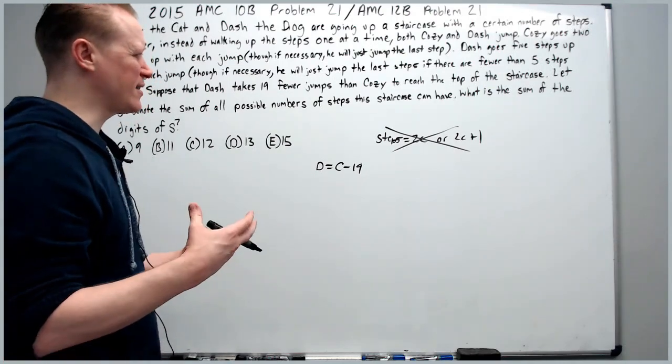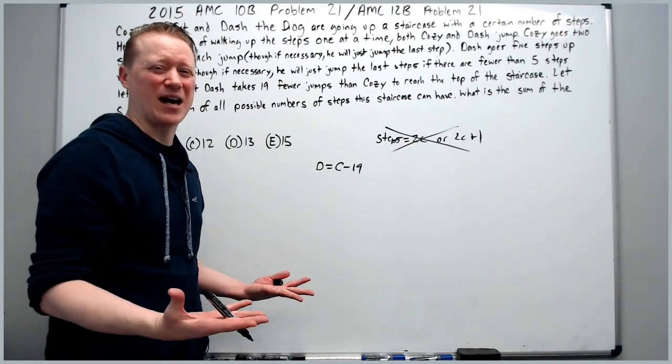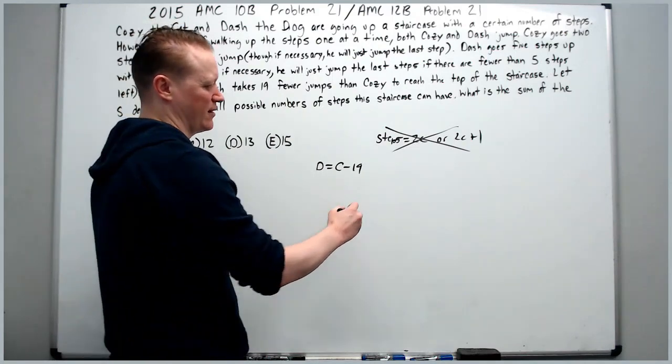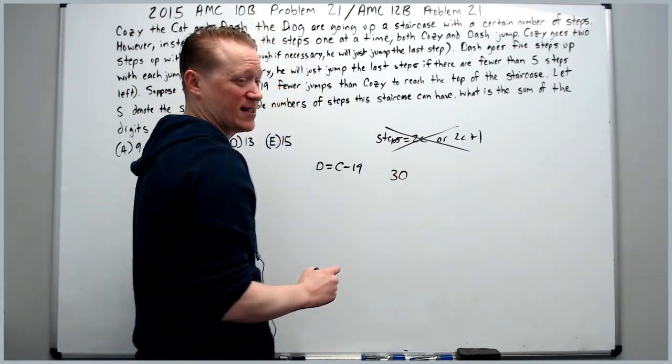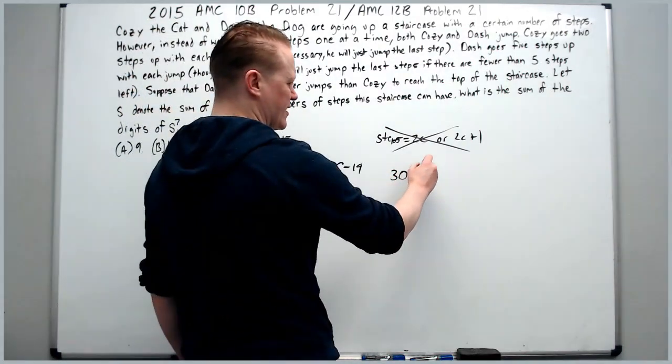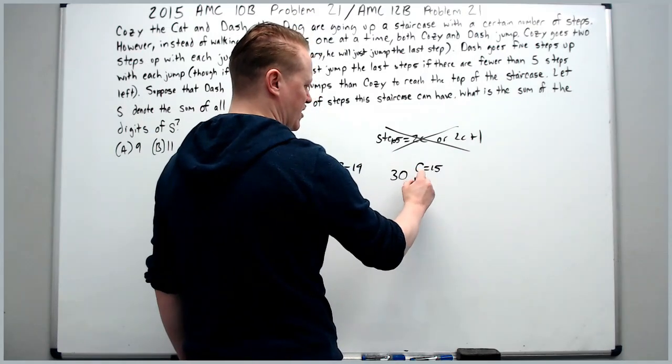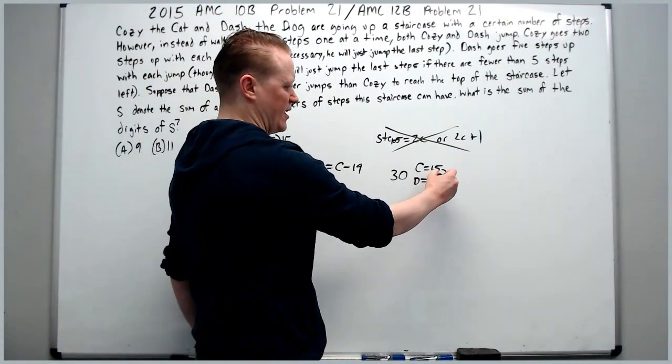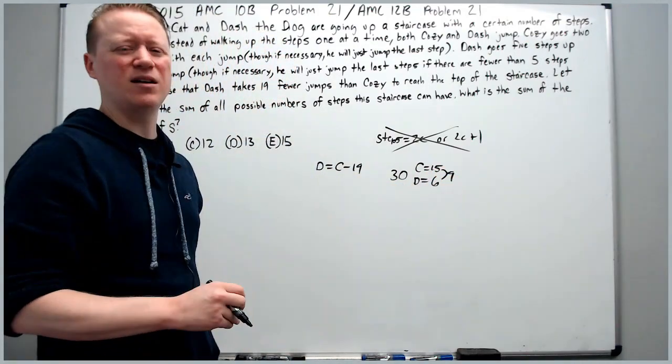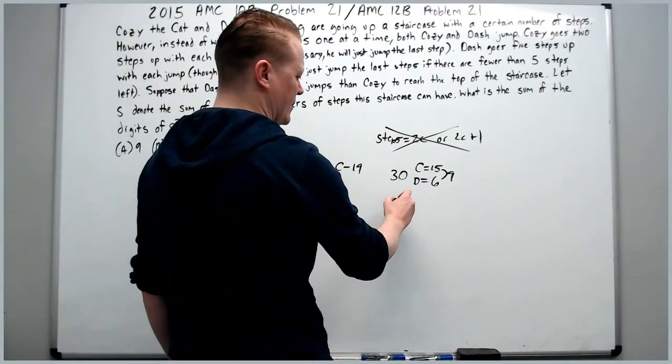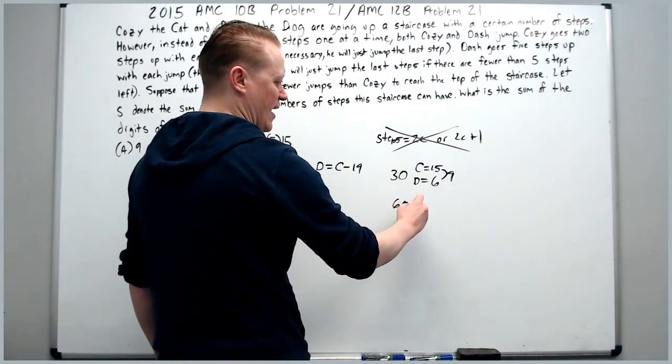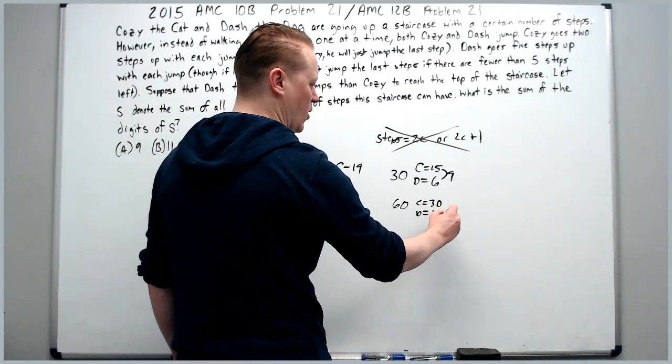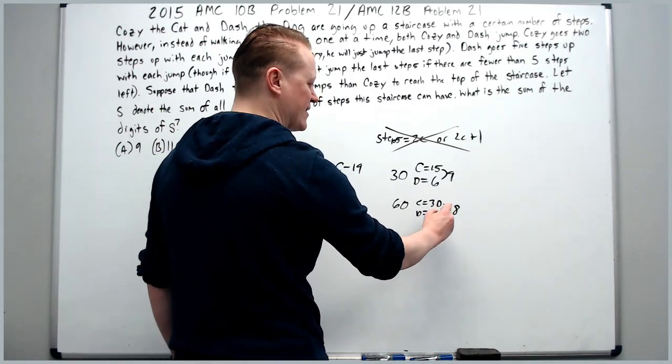So you kind of feel like, well how am I going to do this then if I can't make up those equations? And that's the solution tactic I want to target today. I want you to just to think about just kind of guess and check. Just overcome your lack of ability to make good equations. Just say something like, I don't know, what if there was 30 steps? If there were 30 steps, then Cozy would take 15 jumps and Dash would take 6. So how many fewer jumps is this? It's only 9 fewer jumps, we're not even close. Let's jump up to twice that high, let's go to 60. At 60, Cozy takes 30 jumps and Dash takes 12. Now we're at a gap of 18 between them, that's a lot closer to the 19 we need.